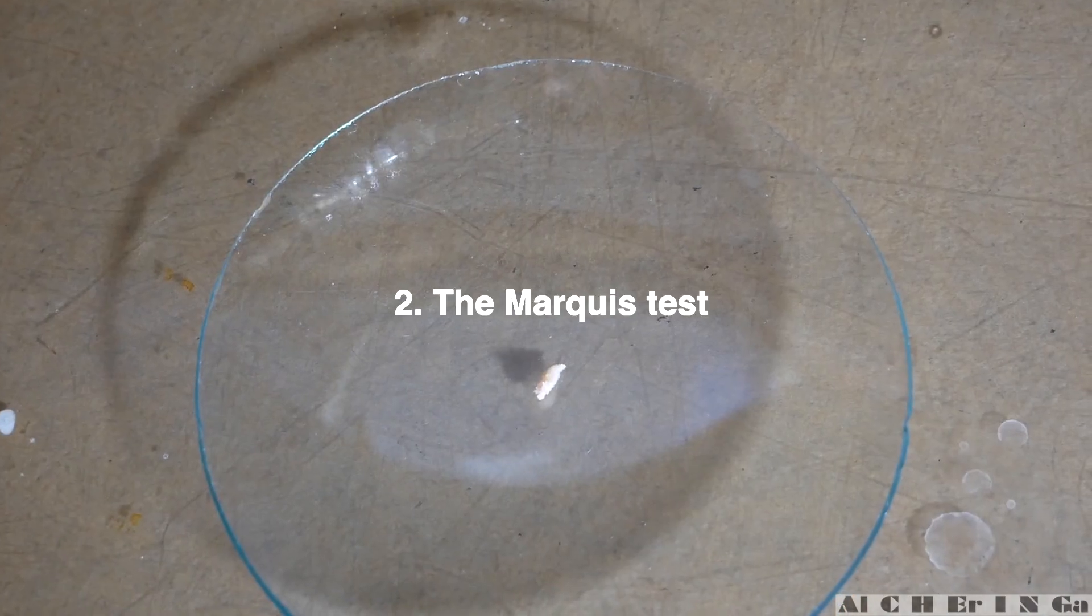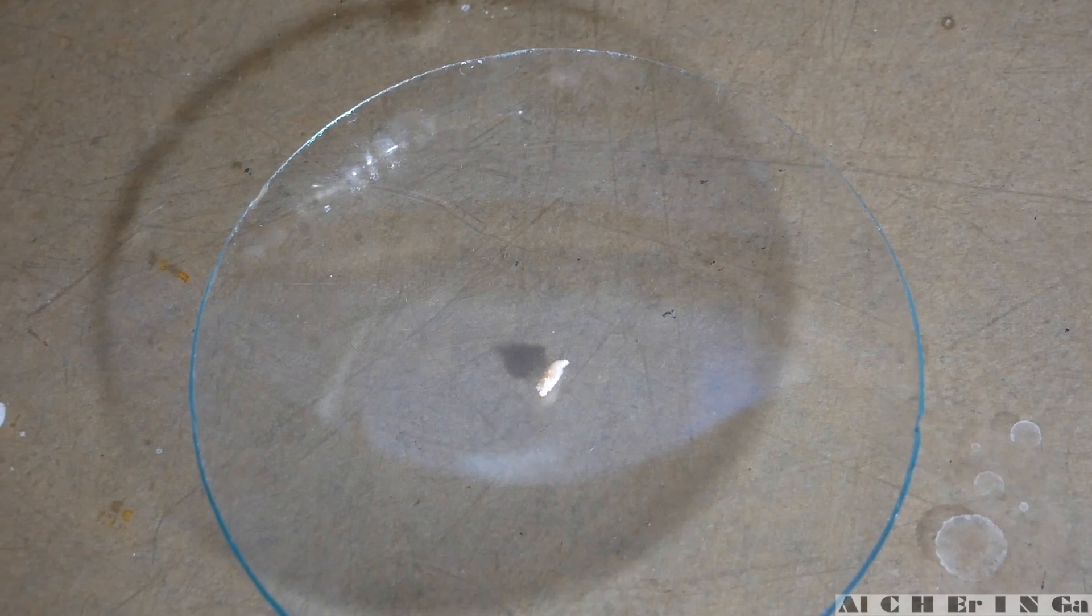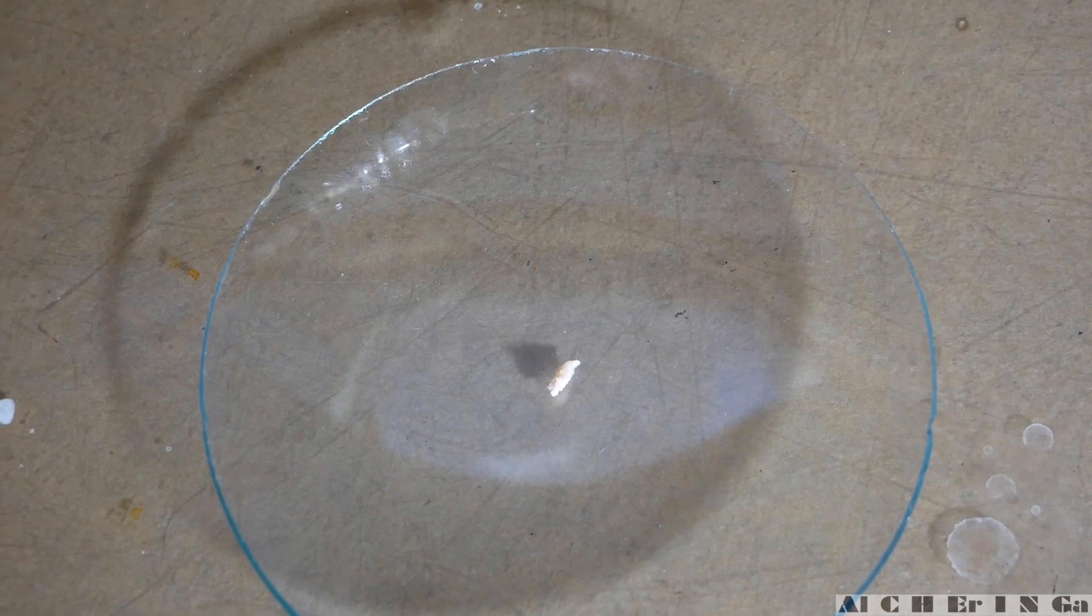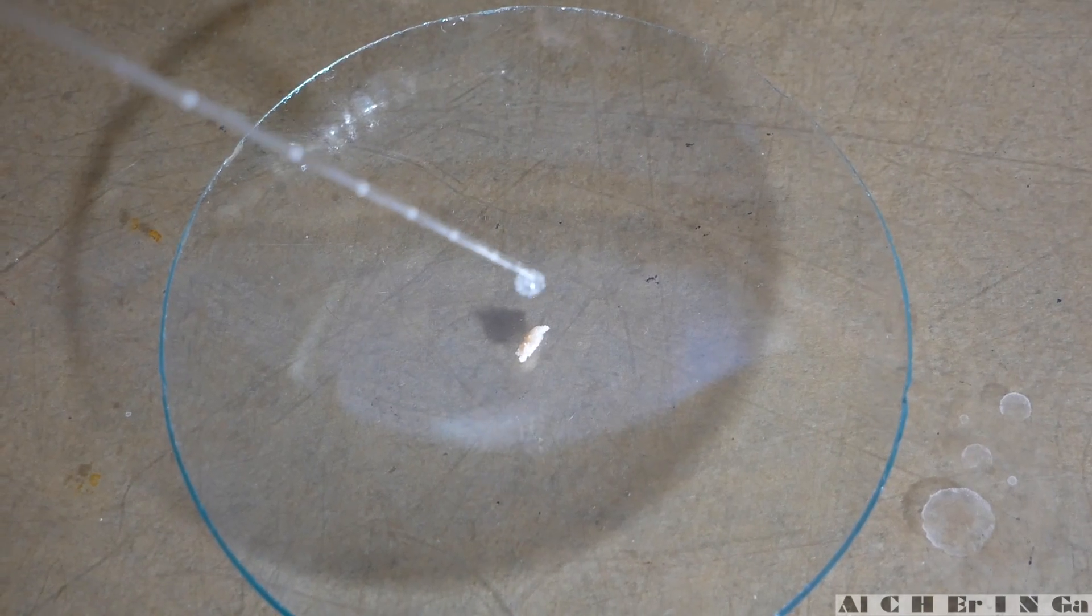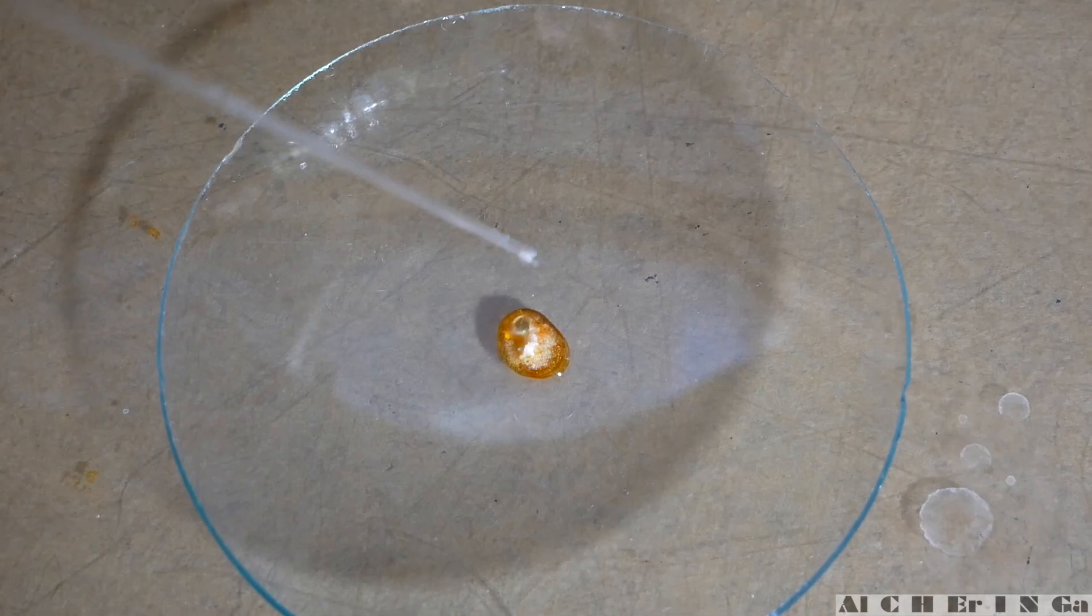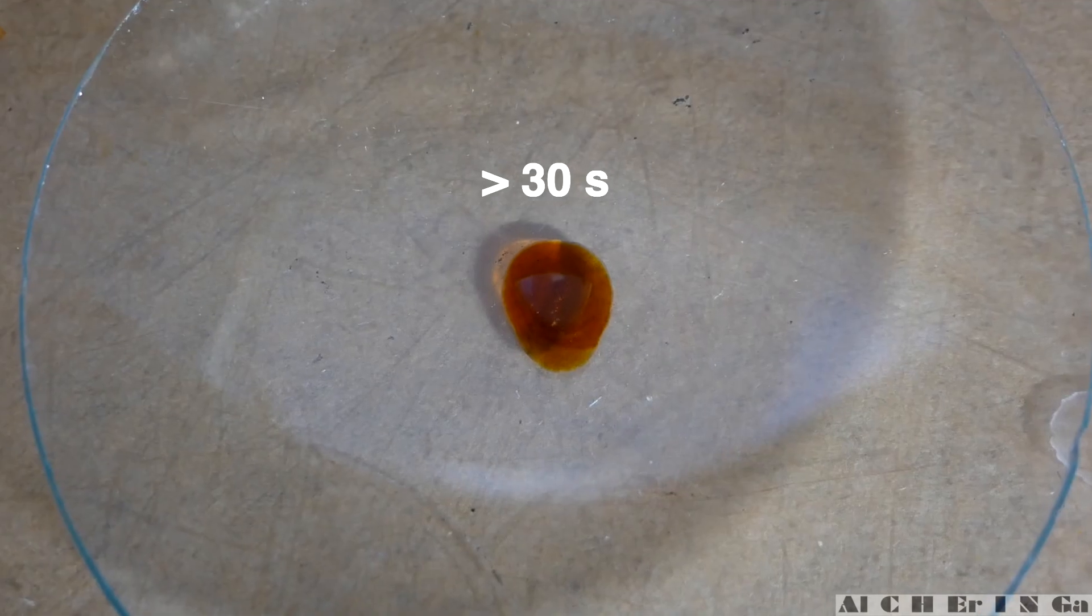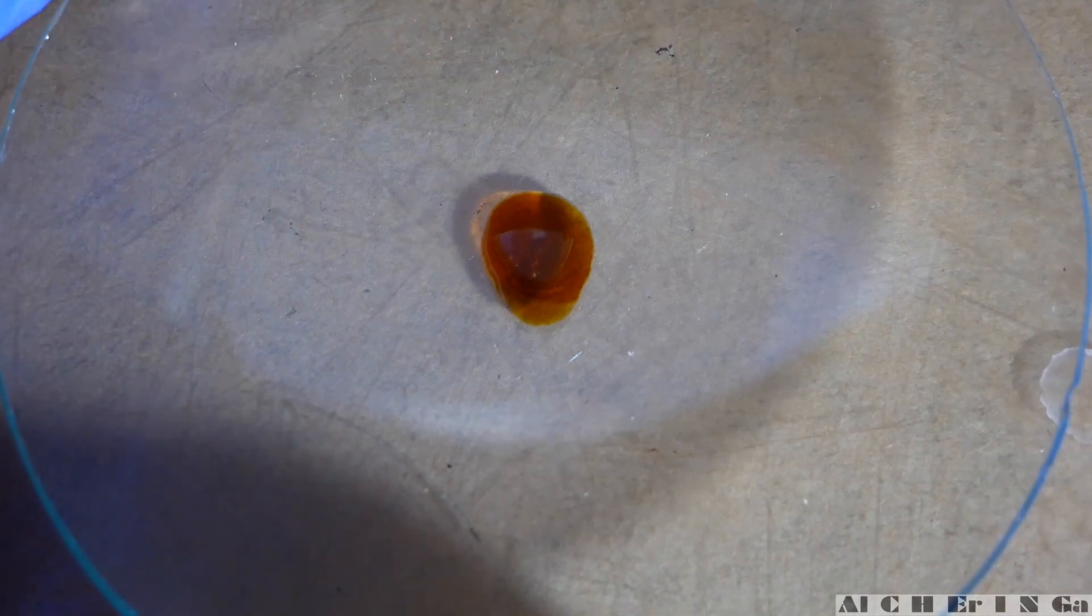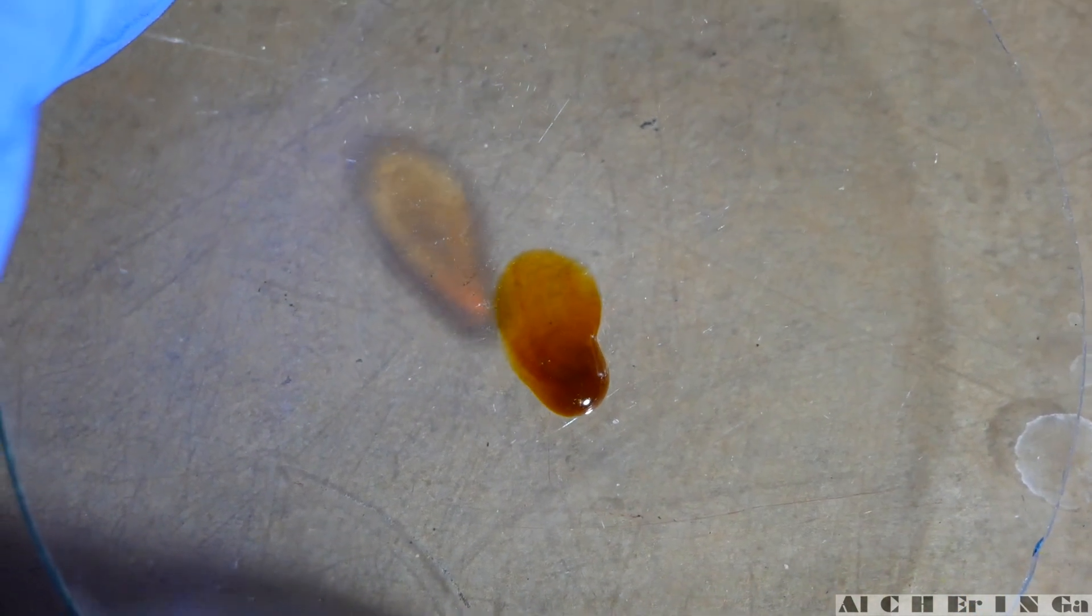Now, the marquis test. This reagent is composed of a mixture of formaldehyde and concentrated sulfuric acid. A small amount of the product was placed onto a watch glass, and a few drops of the reagent was added onto the material. In a few seconds there is fizzing and a color change from a clear to an orange hue. After 30 seconds, the fizzing has subsided, and it seems to have a brown tint. This is a positive test for 2-amino-1-phenyl-propane hydrochloride.